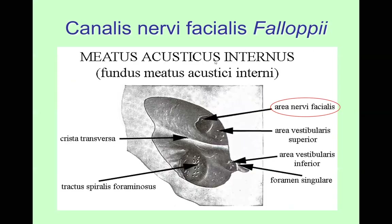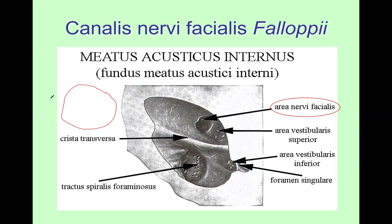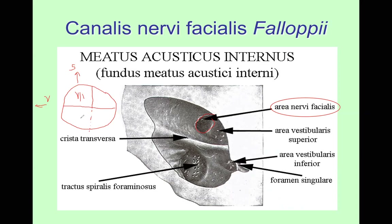At the fundus of the internal acoustic meatus, the facial nerve enters the facial area. You can draw it as a circle divided by a transverse crest and a vertical crest. The facial area is for the facial nerve in the anterosuperior quadrant. The rest is for the vestibulocochlear nerve — the anteroinferior area for the cochlear part and another area for the vestibular part.